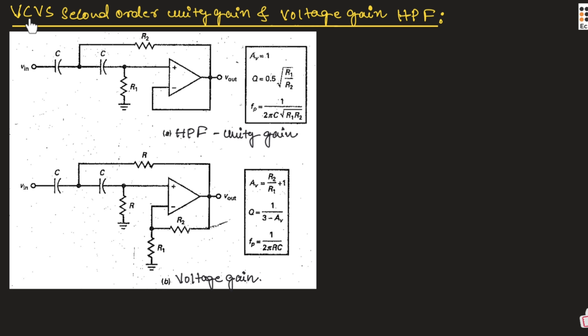If we say voltage controlled voltage source, it means input as well as output will be voltage. That's why it is known as voltage controlled voltage source. It is second order because we are using a combination of two capacitors and two resistors in the circuit.